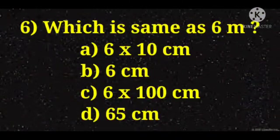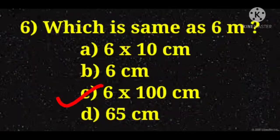Now, number 6. Which is same as 6 metre? 6 x 10 centimetre, 6 centimetre, 6 x 100 centimetre, or 65 centimetre. Yes, 6 metre is equal to 6 x 100 centimetre. That is 600 centimetre. Very good children.